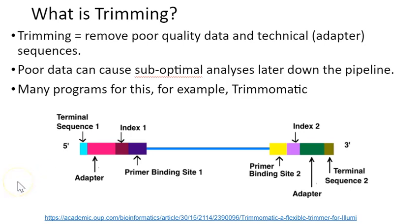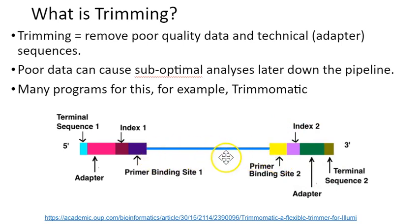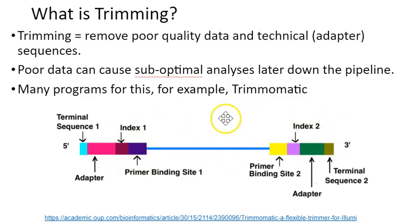Trimming refers to the removal of poor quality data and also technical or adapter sequences, which are not biological. The adapter sequences sit on either end of an Illumina read, and we have biological data in the middle that we want to keep. The adapter sequences are what we want to get rid of at this stage. We also want to eliminate poor quality data, and we want to eliminate reads that read through in some cases.